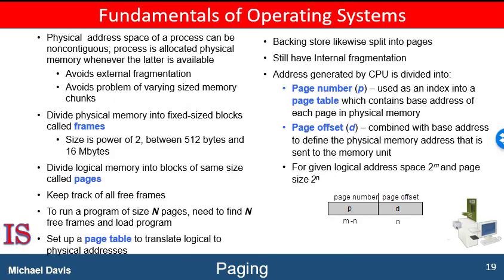Memory management discussed so far has required that the physical address space of a process be contiguous. Now we're going to take another step up the memory management evolutionary ladder. There is another approach called paging, a memory management scheme that permits a process's physical address space to be non-contiguous.